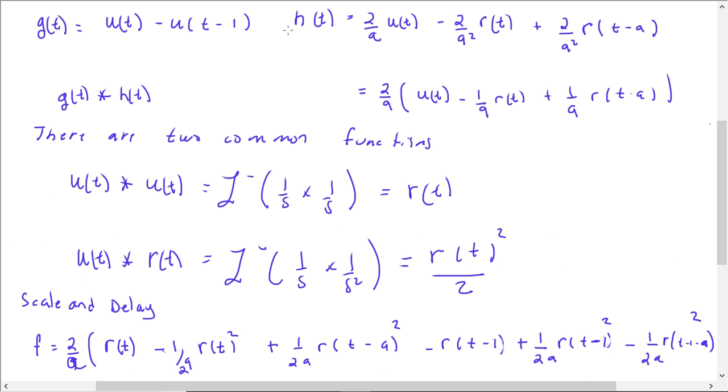We have the same convolution we want to do. But I need to now come up with equations. I have some step functions times a ramp. In fact, there's two common functions: step convolve with step and step convolve with ramp. The final function will have ramps and ramp square divided by two.